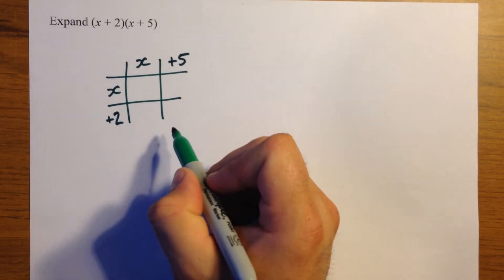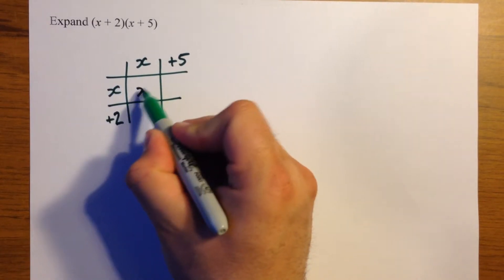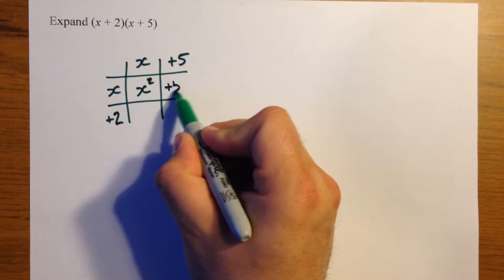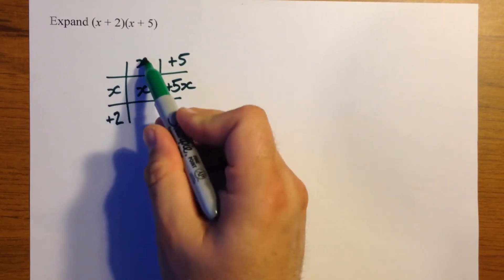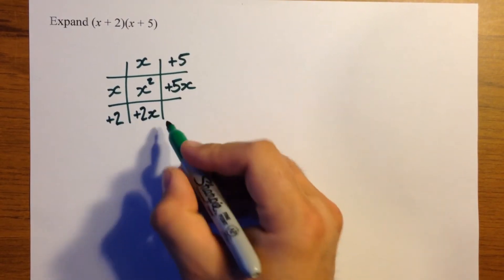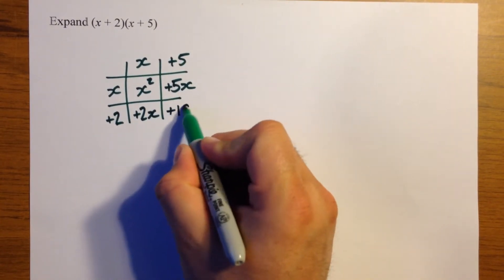Now we always times to fill up grids, so x times x is x squared, x times positive 5 is plus 5x, x times positive 2 is plus 2x, and 2 times 5 is plus 10.